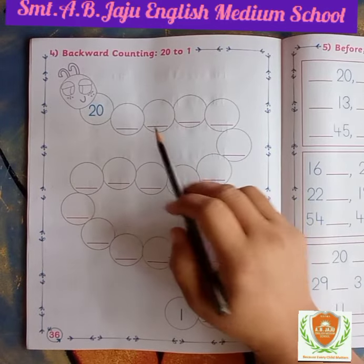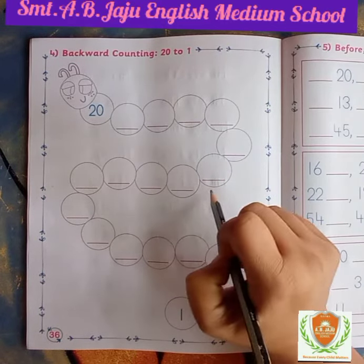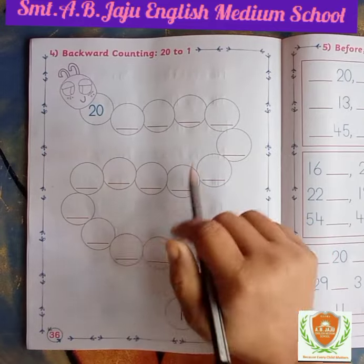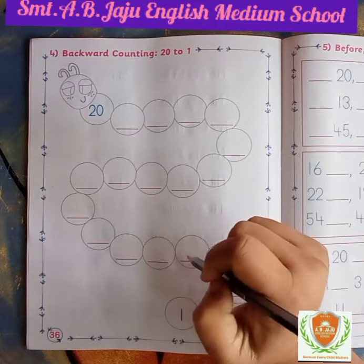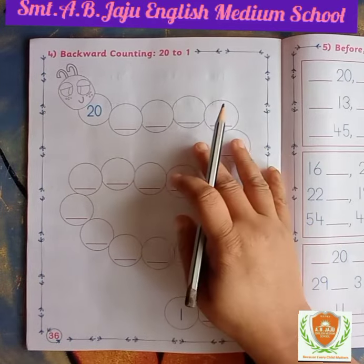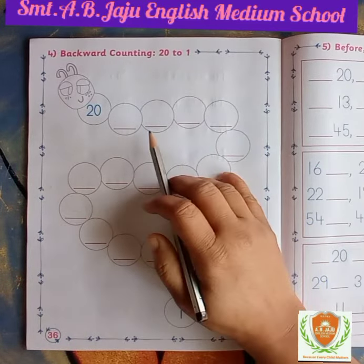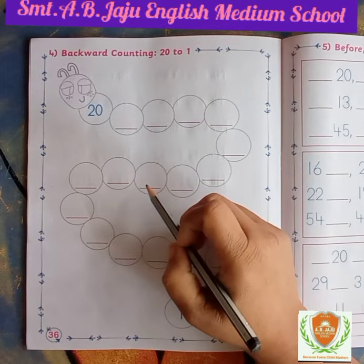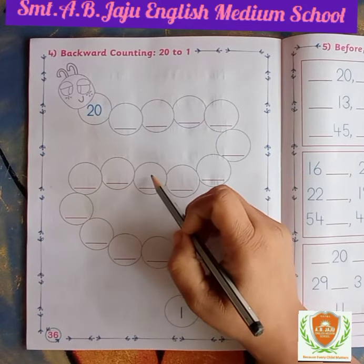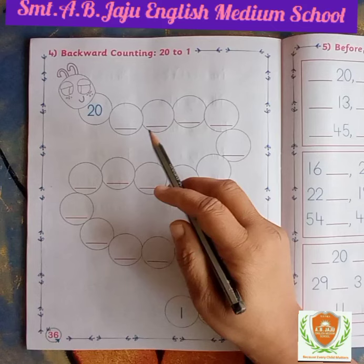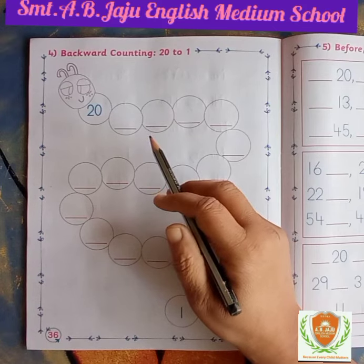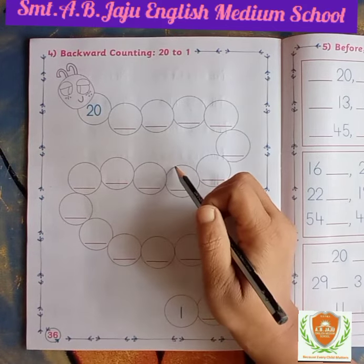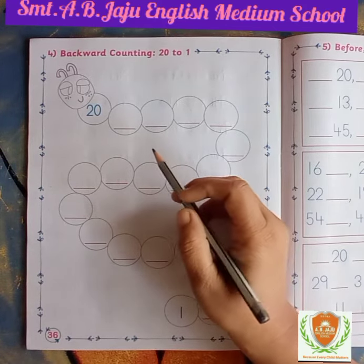There are circles and lines drawn on the caterpillar picture. We have to write down numbers in those circles. This is the picture of a caterpillar — in the circles we have to write down numbers. So we have to write down backward numbers. We need to write backward numbers in the circles.